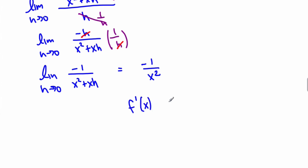We can even write that more appropriately: f prime of x is equal to negative 1 over x squared.